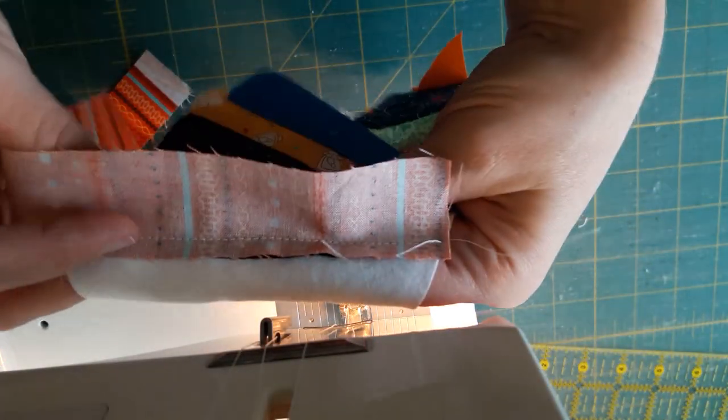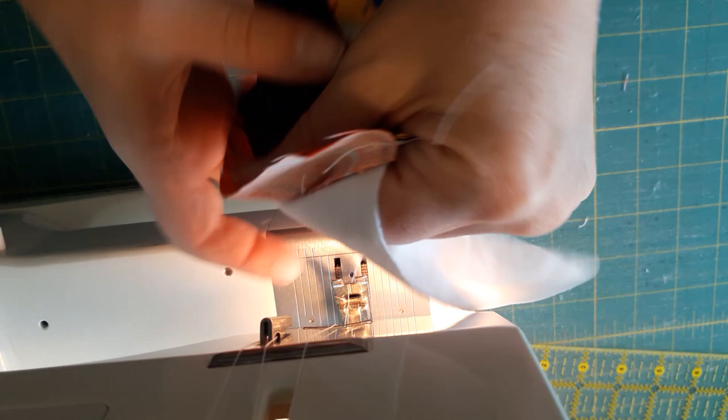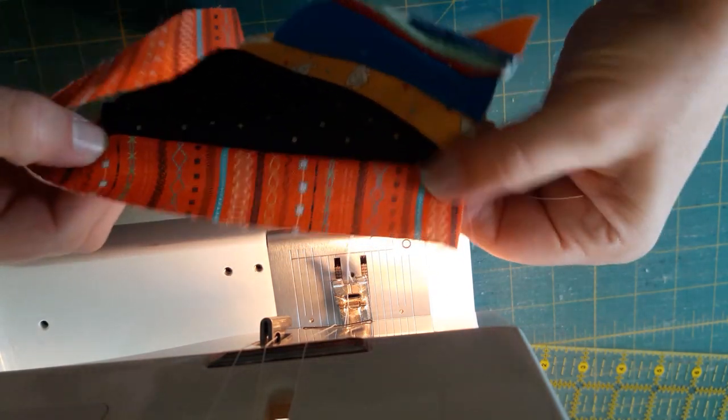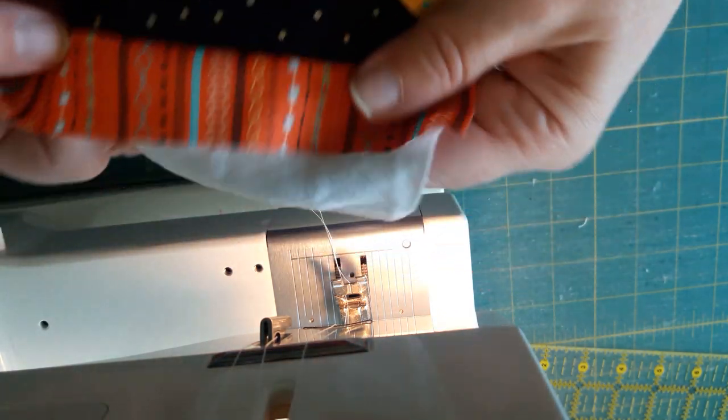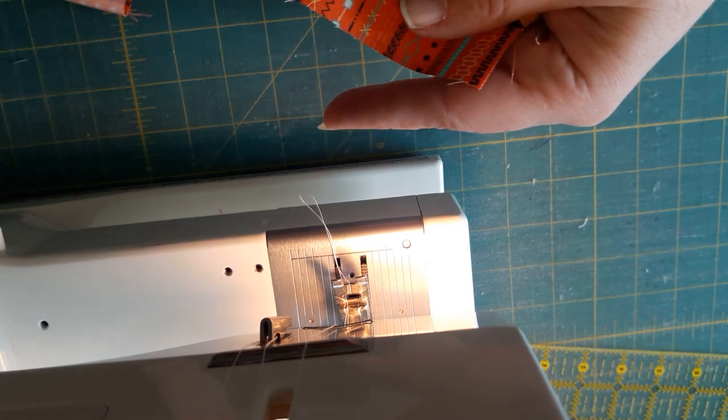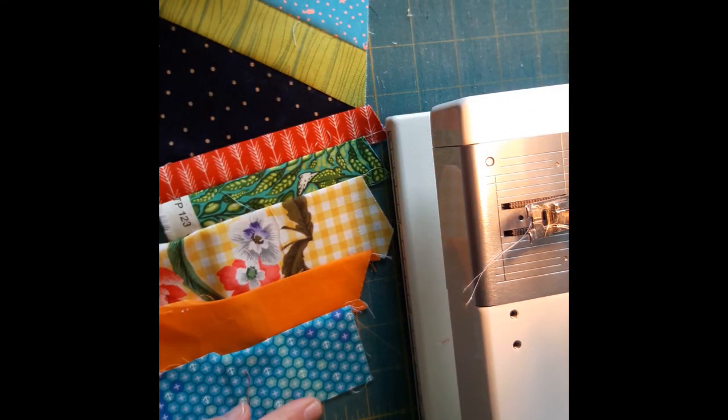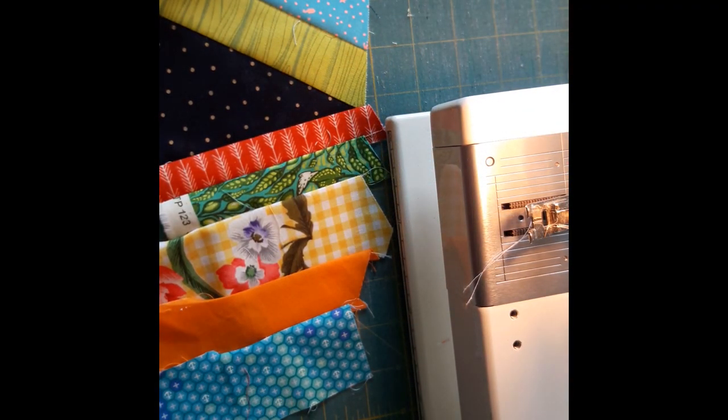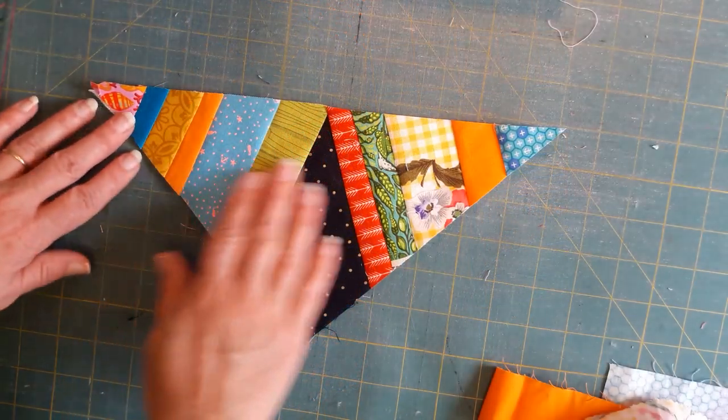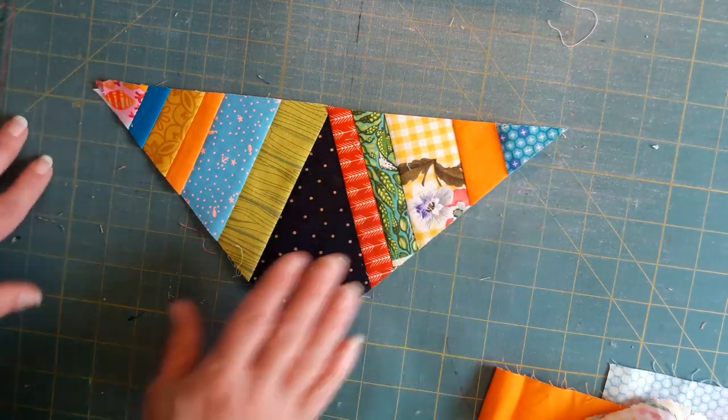Then we're going to set the seam and press it back, just as before. And then we're just going to continue down our foundation. So it looks like this, and then once again we're going to trim it. So you get your triangle that looks like this.